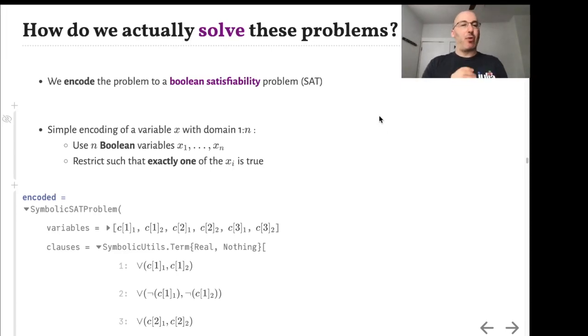How do we actually solve these problems? One way is to encode the discrete problem to a boolean satisfiability problem, SAT. That means we're just going to have boolean variables. A simple way to encode a variable x which lives in the domain 1 to n, integers 1 to n, is to use n boolean variables x1 up to xn, with the constraint that exactly one of the xi must be true.